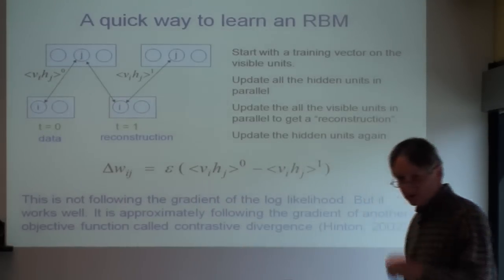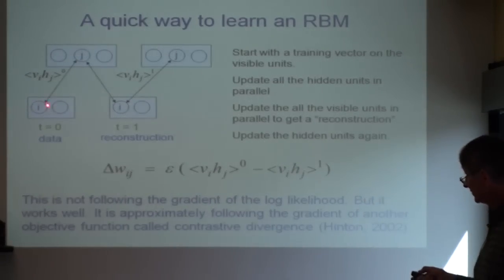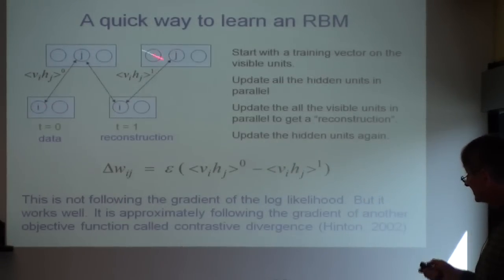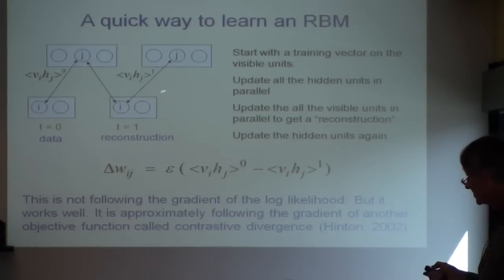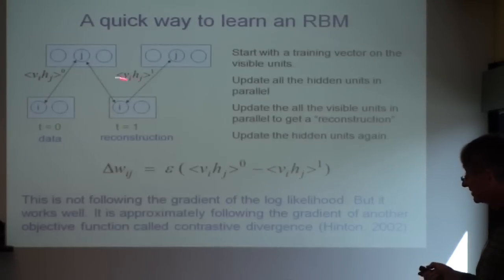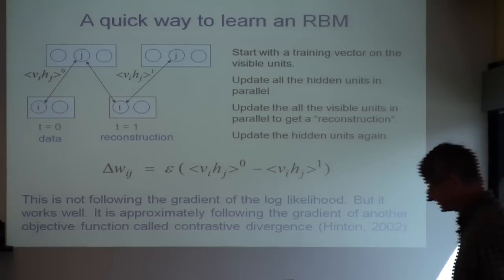It turns out you can get a much quicker learning algorithm where you just go up and down and up again, and you take this difference of correlations. Justifying that is hard, but the main justification is it works and it's quick.